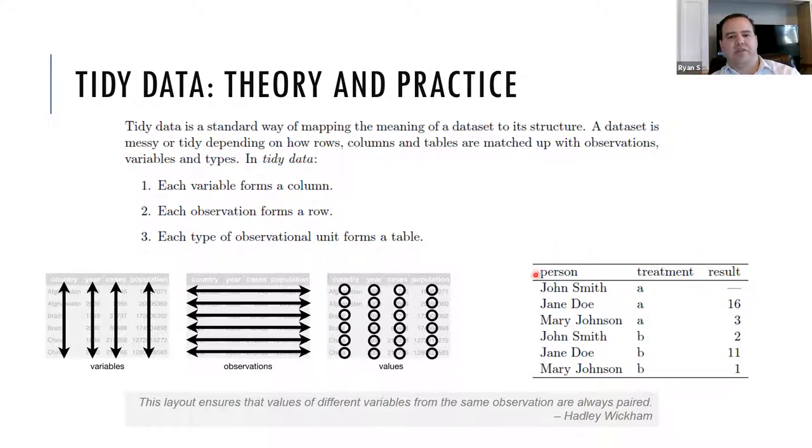And then each observation forms a row, so every patient or every reading with all the different values come into these rows, and then taken together is an observation unit forming a table. And so this tidy version of that table that we were just looking at illustrates this. So each variable forms a column, person, and treatments, treatment A or treatment B, and then results. Each observation forms a row, and then all together it's the treatment plan or the trial, clinical trial, as it were. Hadley Wickham mentioned, this layout ensures that values of different variables from the same observation are always paired, and so this tidy structure ensures that you have, under one observation, it's a person taking a treatment and getting a result. And every row follows that, a person taking a treatment, getting a result.